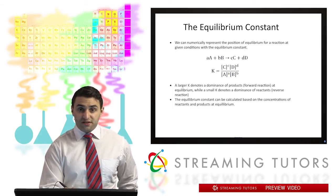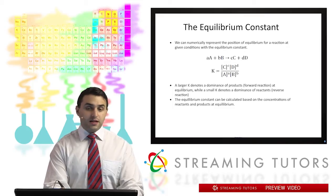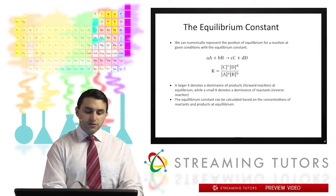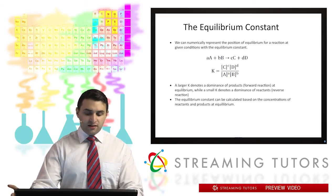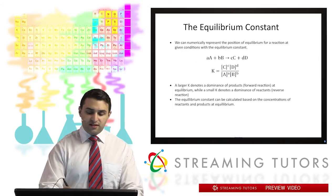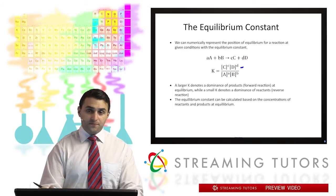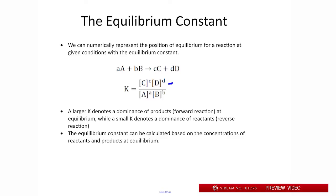So that would be C to the C power, D to the D power, divided by A to the A power, and B to the B power. So what you'll notice then is that a larger K is going to mean a dominance of products. That would mean C and D are larger. If K is small, that's going to mean there's going to be a dominance on the reactants, or the reverse reaction will be more favorable.